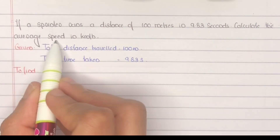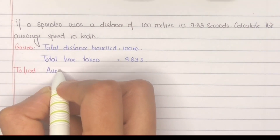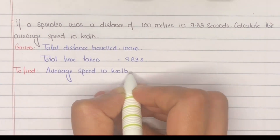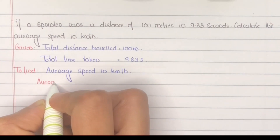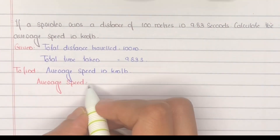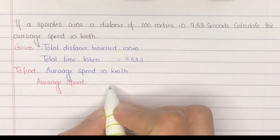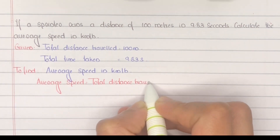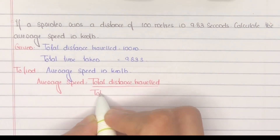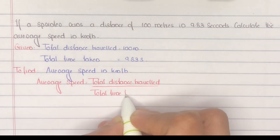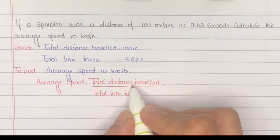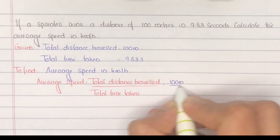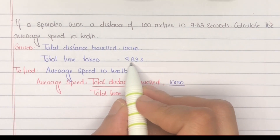To find average speed in kilometers per hour: average speed equals total distance traveled divided by total time taken. Substituting the values, total distance traveled is 100 meters divided by total time taken of 9.83 seconds.